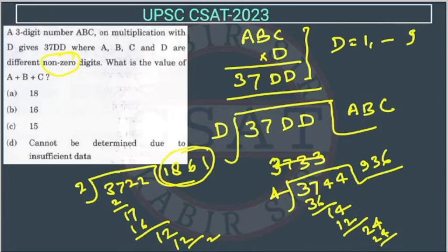So, if you will see, we are getting different values. This is A, this is B, this is C and value of D is also different. So, the answer will be A plus B plus C, so this is 9 plus 3 plus 6, so that's 18, so the answer will be option A.